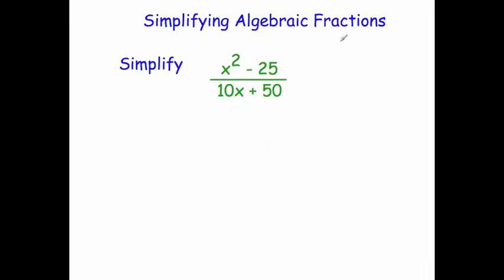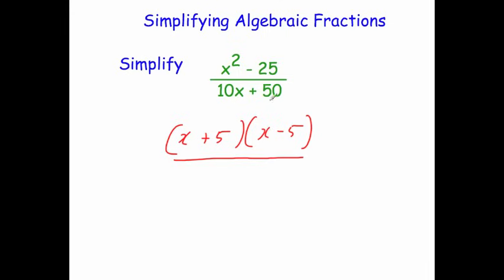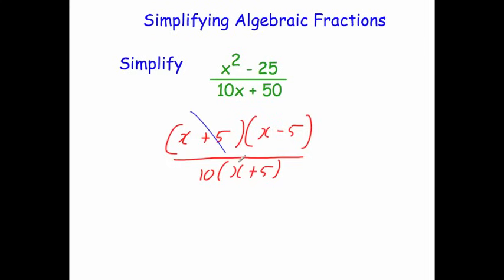This time we've got x squared minus 25 over 10x plus 50. The numerator is the difference of two squares — x squared and 25 are both squared expressions with a subtract — so it factorises to x plus 5 times x minus 5. The denominator, 10x plus 50, has a factor of 10, giving 10 bracket x plus 5. We've got x plus 5 on the top and bottom, so cancelling those leaves x minus 5 over 10. That's our algebraic fraction simplified.